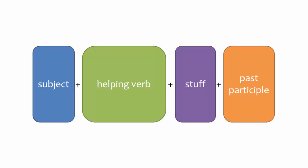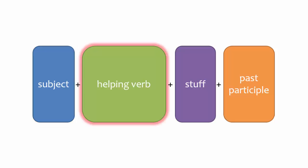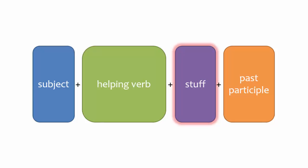A typical sentence in the compound past is composed of the following: the subject, which is the person or object doing the action; a helping verb, which you will learn about in this video; and words that say when, to whom, or for whom the action happened, as well as other words that add to the meaning of the sentence.